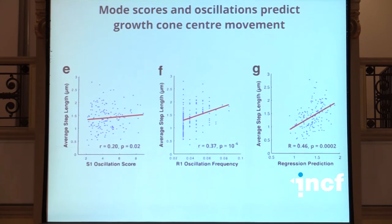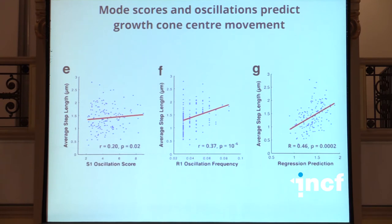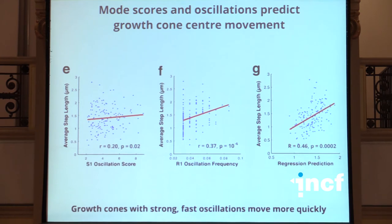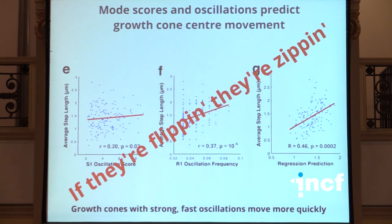It turns out these mode scores and oscillations actually predict the movement. If you look at how far a growth cone has traveled over an entire movie and ask whether any properties of the oscillations predict the amount of movement, the strongest correlations are with the score measuring the strength of the oscillation in the thinness-versus-fatness mode. There's also a correlation with the frequency of the R1 bending mode. If you put the top few modes into a regression, using the strengths and periods of oscillations to predict distance moved, you get quite a strong prediction: growth cones with strong, fast oscillations are moving more quickly.